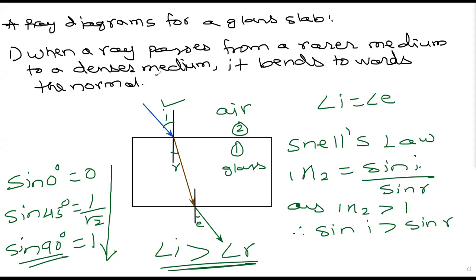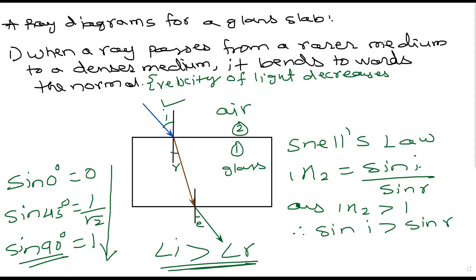Note this down: the velocity of light decreases in the denser medium. That is the reason behind light bending towards the normal when going from rarer to denser — the change in velocity.